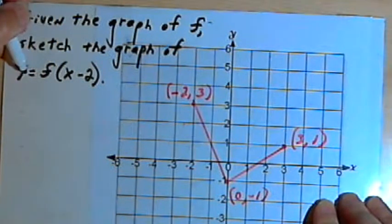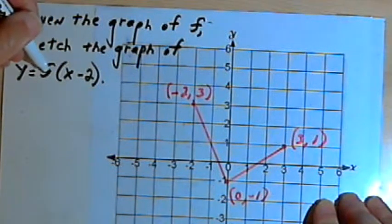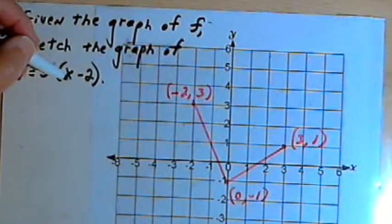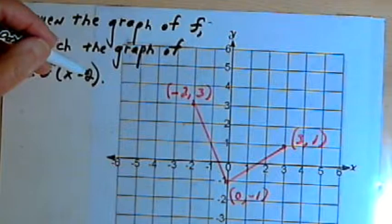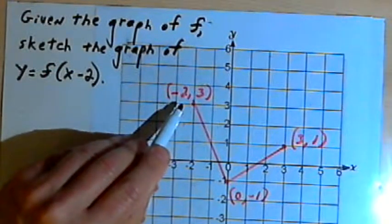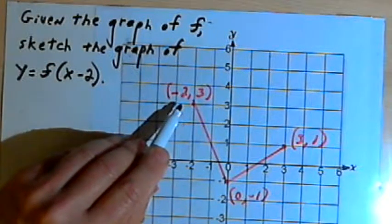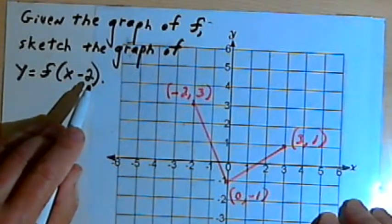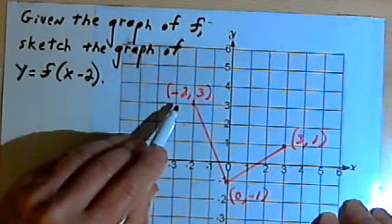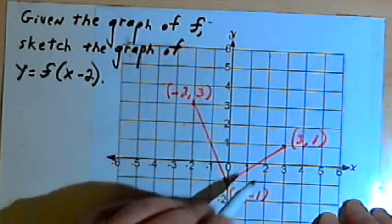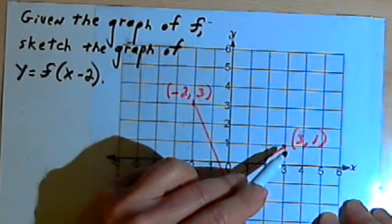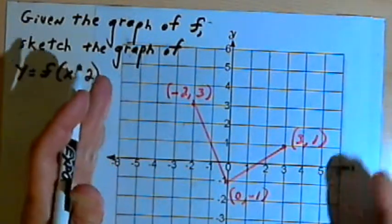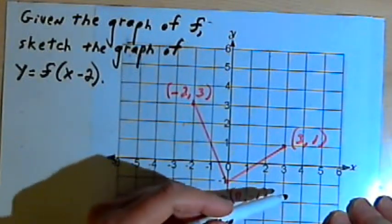We're going to know how to move them by looking at this y equals f of x minus 2. Now this is where it gets a little bit strange. You would think that if we have x minus 2, we would take the x-coordinates and subtract 2 from them. But we're going to be doing the opposite. x minus 2 is telling us to add 2 to each of the x-coordinates. The y-coordinates are going to stay the same. When we add 2 to each of those x-coordinates, the graph is going to shift 2 units to the right.